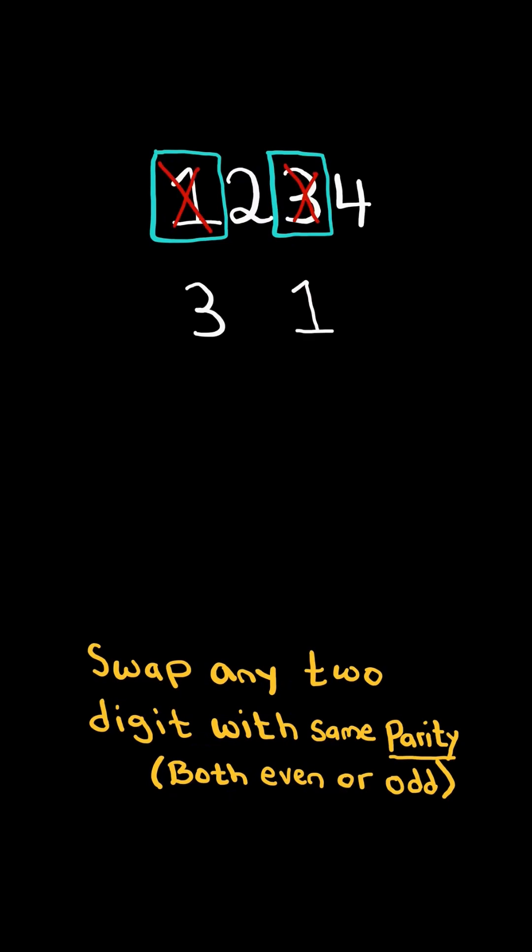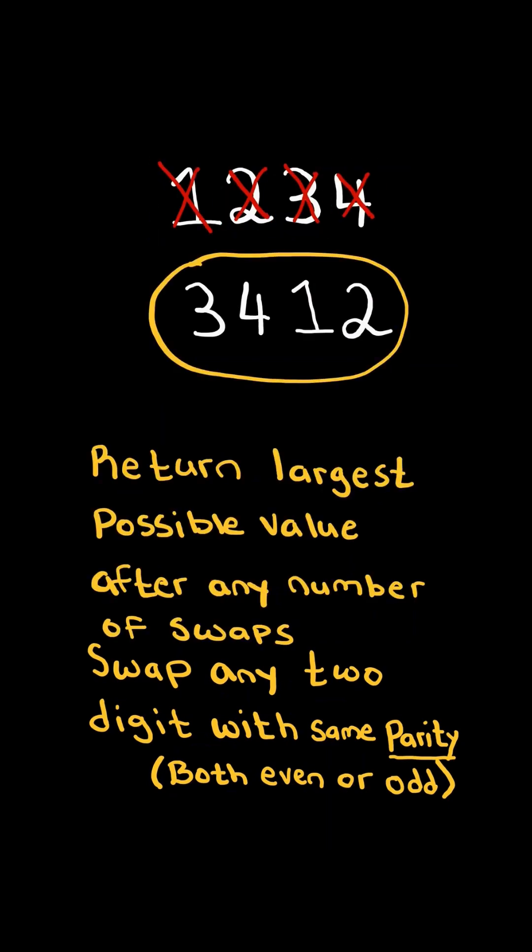For example, 1 and 3 are odd, so we can swap them. And both 2 and 4 are even, so we can swap them. Return the largest possible value after any number of swaps.